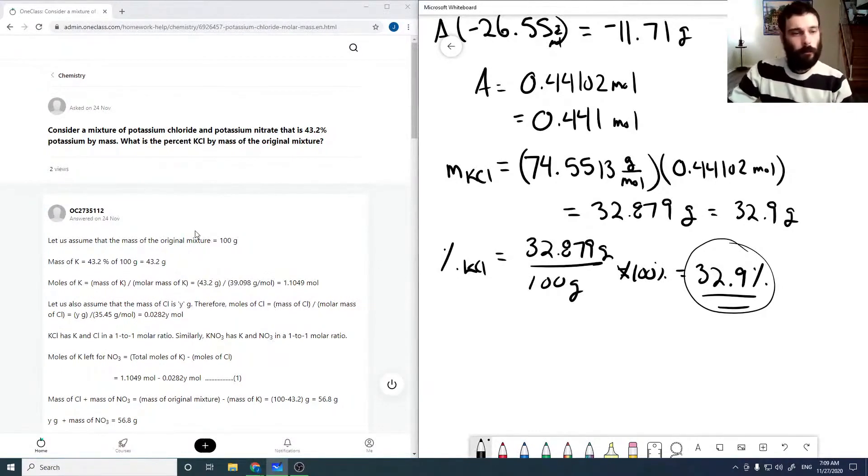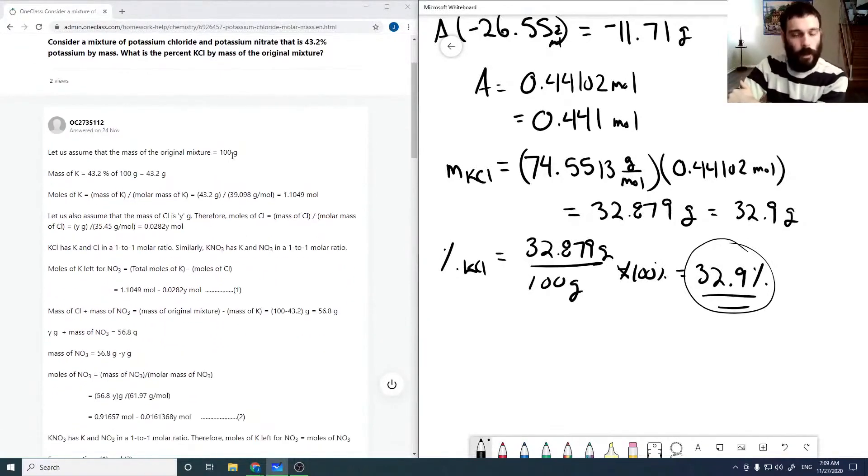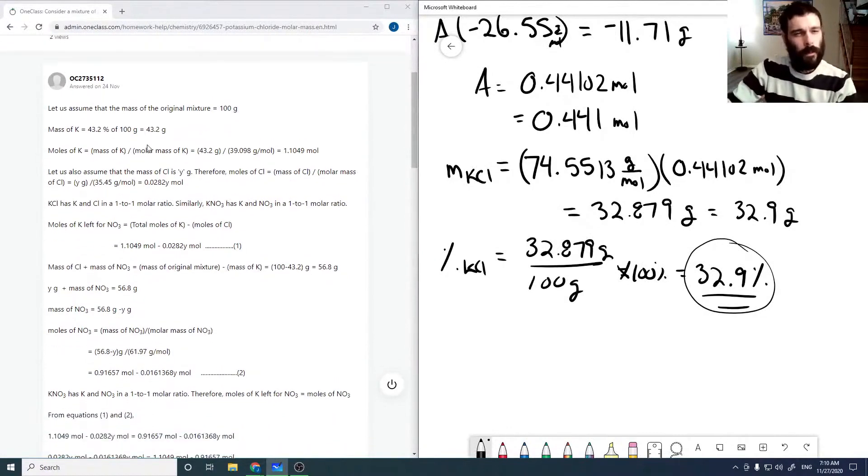Okay, looking through the solution. The easiest way is to assume that the mass is 100 grams and then use that to find our percentage. Again, this will apply to any mass amount, not just the 100 grams, but a 100 gram sample makes it easier. So we can calculate our mass of potassium, our moles of potassium.